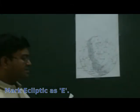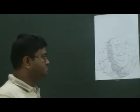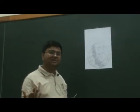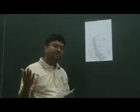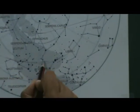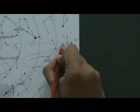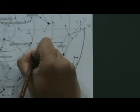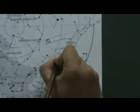The ecliptic is the imaginary path of the sun in the sky. The sun passes through the zodiacal constellations. You can start identifying the constellations here: you can find Aquarius, Capricornus, Ophiuchus, Scorpius, Libra, and Virgo. So this is your equator Q, and this is the ecliptic E.